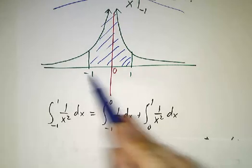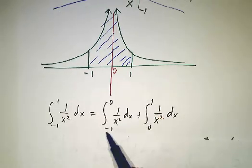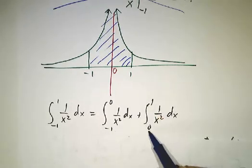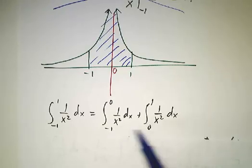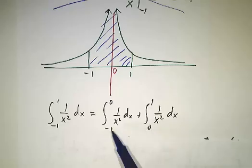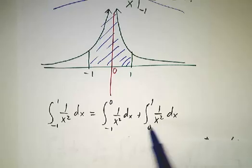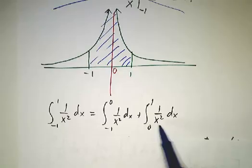Instead of writing the integral from negative 1 to 1, you have to write it as the integral from negative 1 to 0, plus the integral from 0 to 1. And you evaluate this integral and you evaluate this integral. You do them separately. And then if this converges to some number and this converges to some other number, then you add the two numbers together.